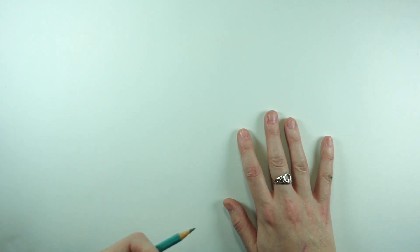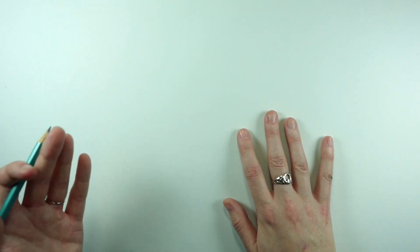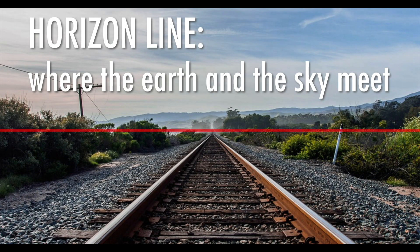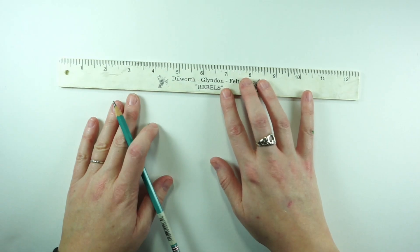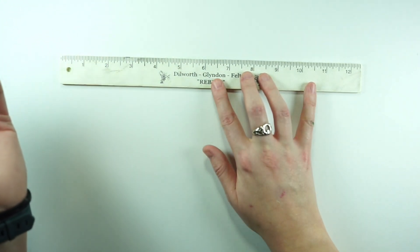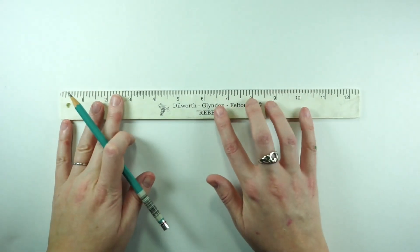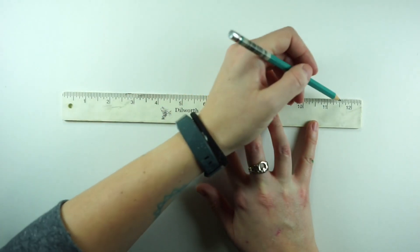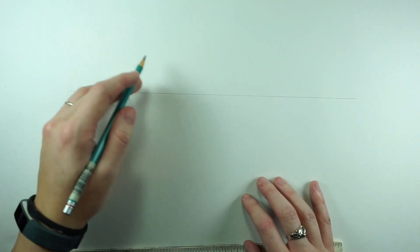There are some things you need to have in a perspective drawing. First, we need a horizon line. The horizon is where the earth and the sky meet — it's also your eye level. Whether you're up in an airplane or laying on the ground, whatever your eye level is becomes the horizon line. We're going to put it near the middle so we have room above and below for our drawing.